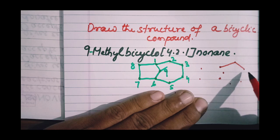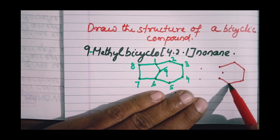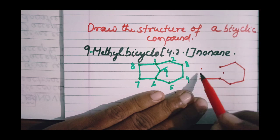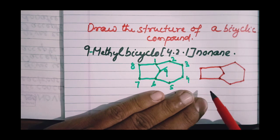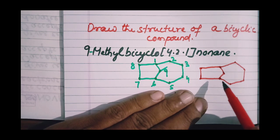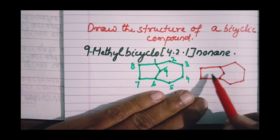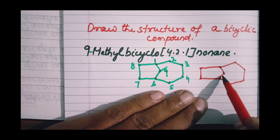One of the bridgehead carbons is given number one: one, two, three, four, five, six. You see, numbering of the bigger ring is done first.